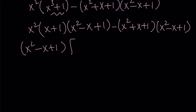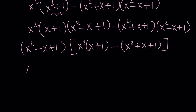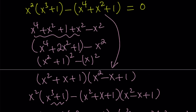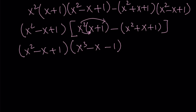We take out x squared minus x plus one. The other factor is x squared times x plus one minus the remaining terms. Simplifying: x squared times x gives x cubed, the x squared terms cancel out, leaving x cubed minus x minus one. So we've factored this quintic into a quadratic and a cubic, and we set it equal to zero.